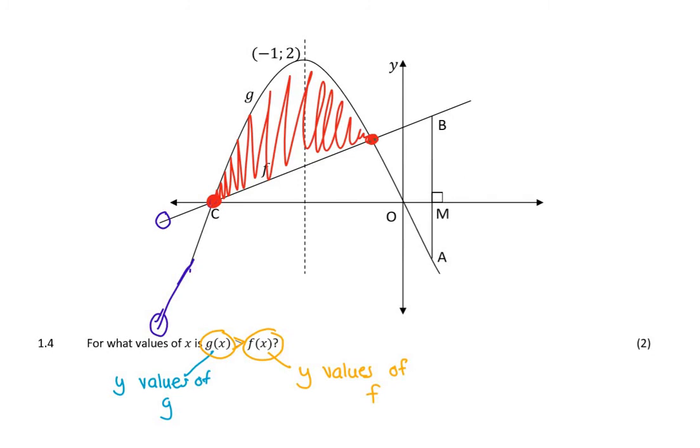So how do I write that as an inequality? Well, it's from these x's at c all the way to those x's, which I know is at minus a half. So my answer is simply, my x values must be less than minus a half, but greater than minus two. Now, I haven't included any of those because the question said, where is the parabola greater than the straight line? It didn't say equal to. So that is one inequality because that is one interval. It isn't a part of the graph and then another part. It's one solid section of the graph.